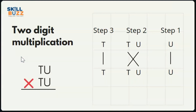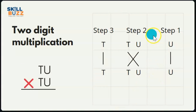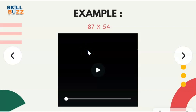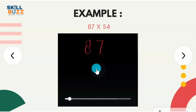We will have three steps. First, you will multiply your unit digits. The second will be unit and tens cross, and tens. The third step will be tens and tens. First, we will see this example, that is 87 into 54.